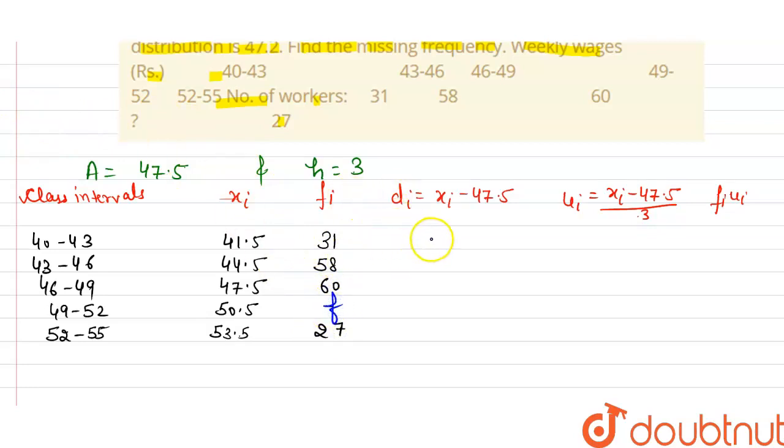Now calculate di: that is xi 41.5 minus 47.5, that is minus 6. Same as usual: that is minus 3, 0, 3, 6. And if we calculate ui, that is di divided by 3: that is minus 6 upon 3, that is minus 2, minus 1, 0, 1, and 2.